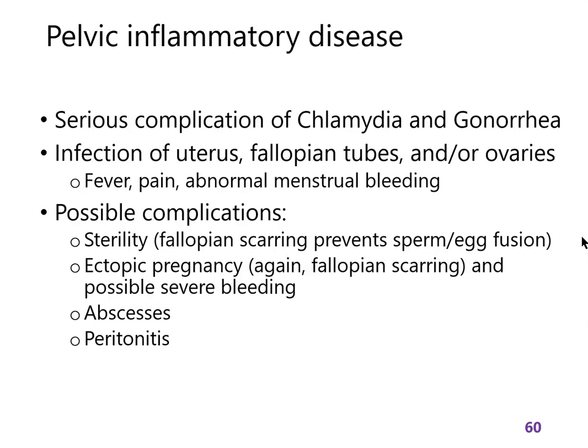In abscesses and peritonitis, bacteria are either escaping from the reproductive system into the peritoneum or being trapped in localized abscesses. These are the primary complications that occur in females, and are typically what we are trying to prevent by treating these diseases early. The next video will cover syphilis.